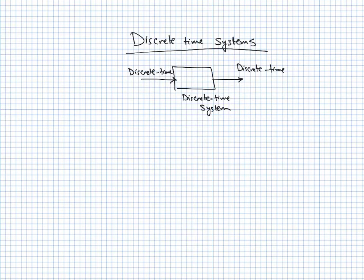If the input and output of a system are both continuous, the system is continuous time. If both are discrete, it is a discrete time system. Systems that fall in between — such as analog-to-digital and digital-to-analog converters — are called hybrid systems, but those are outside the scope of this course.